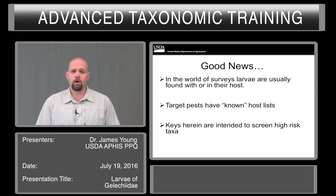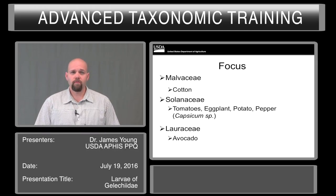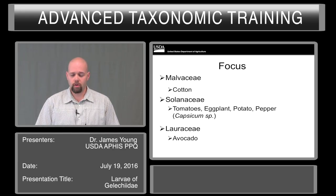The keys herein are intended to screen the high-risk taxa only. A word of caution: do not try to force things through the key. If they are not working, they are obviously not meant for this key. The main focus will be pests of cotton, and then pests of tomatoes, eggplant, potato, and pepper — all major agricultural commodities.